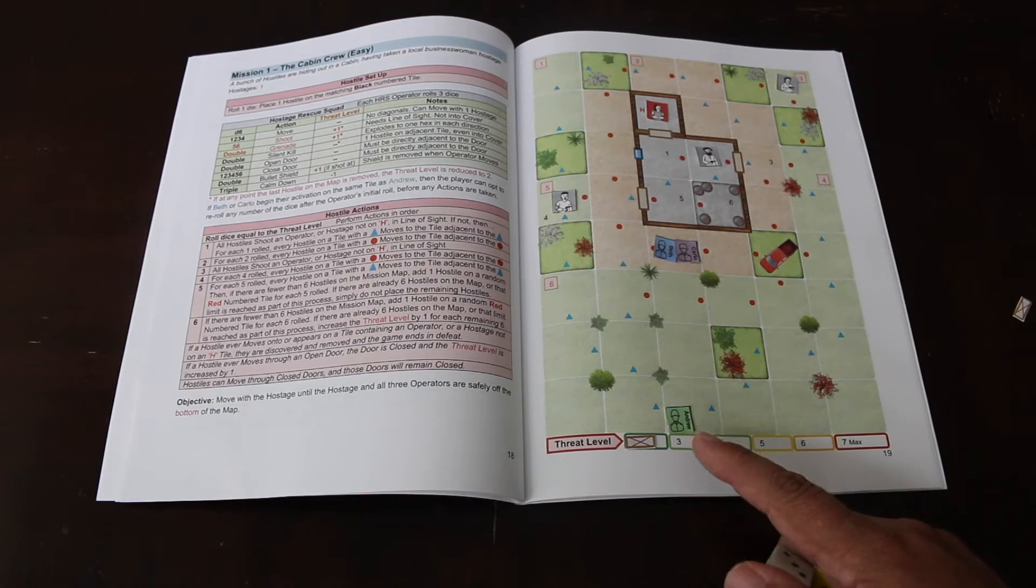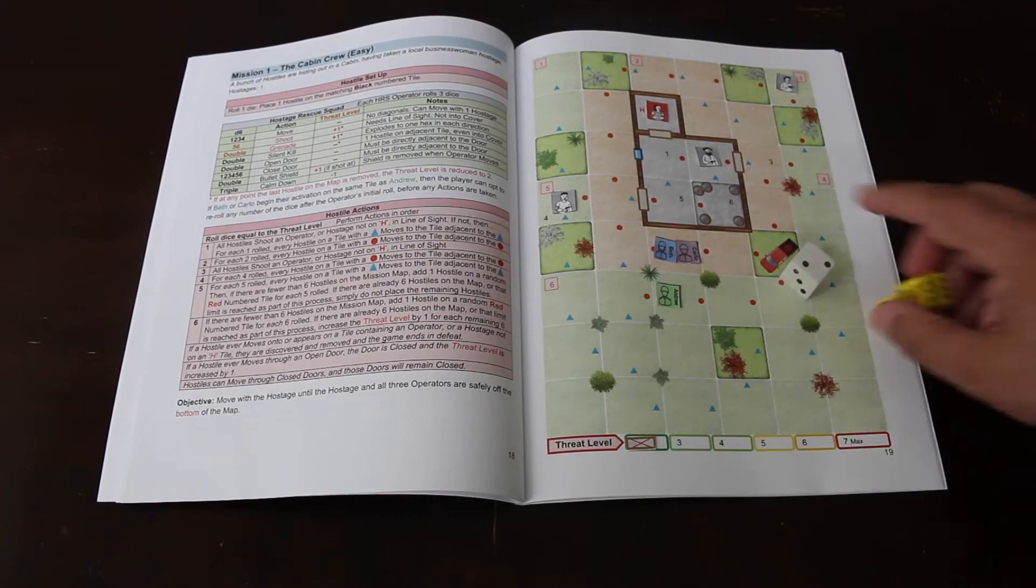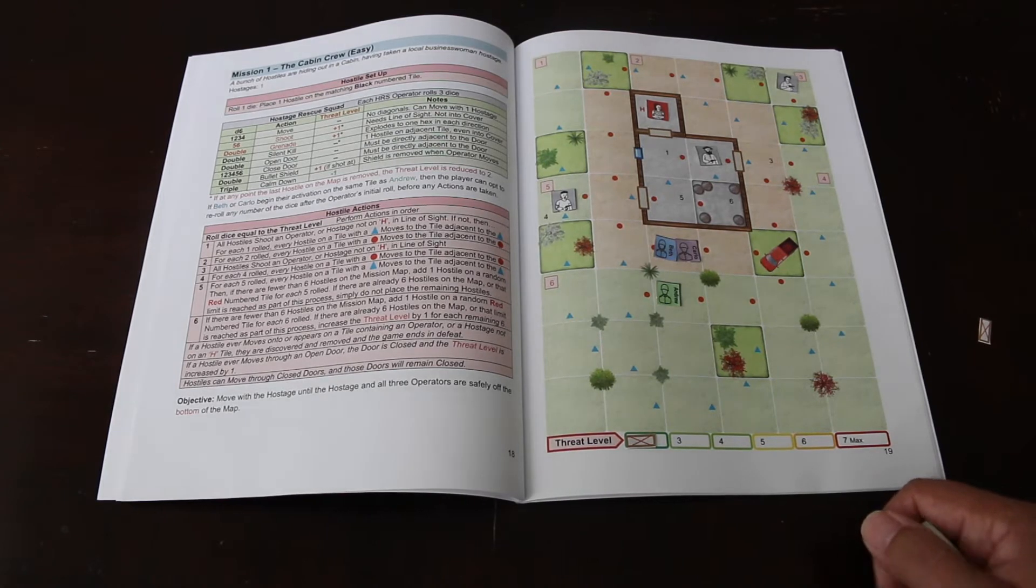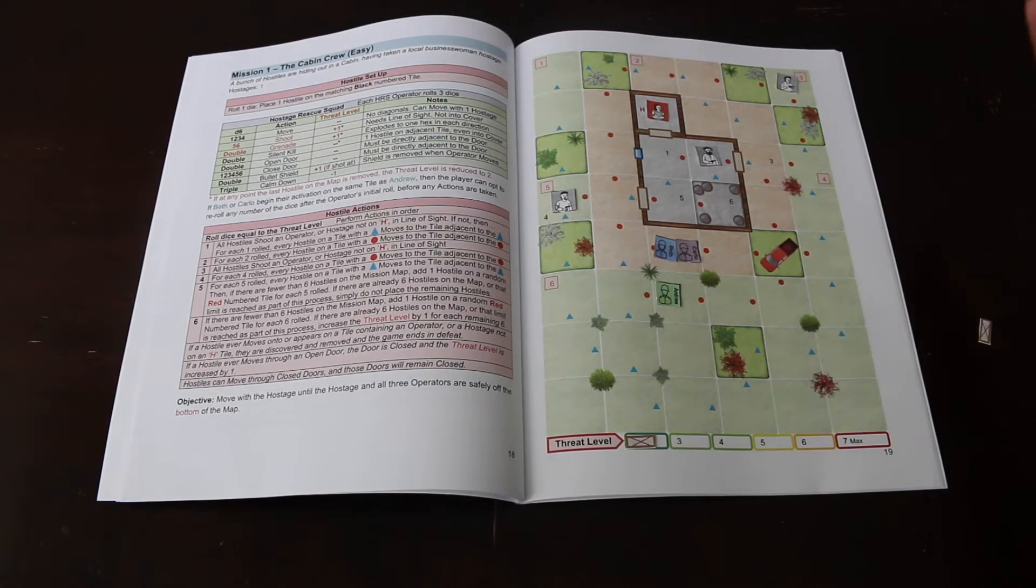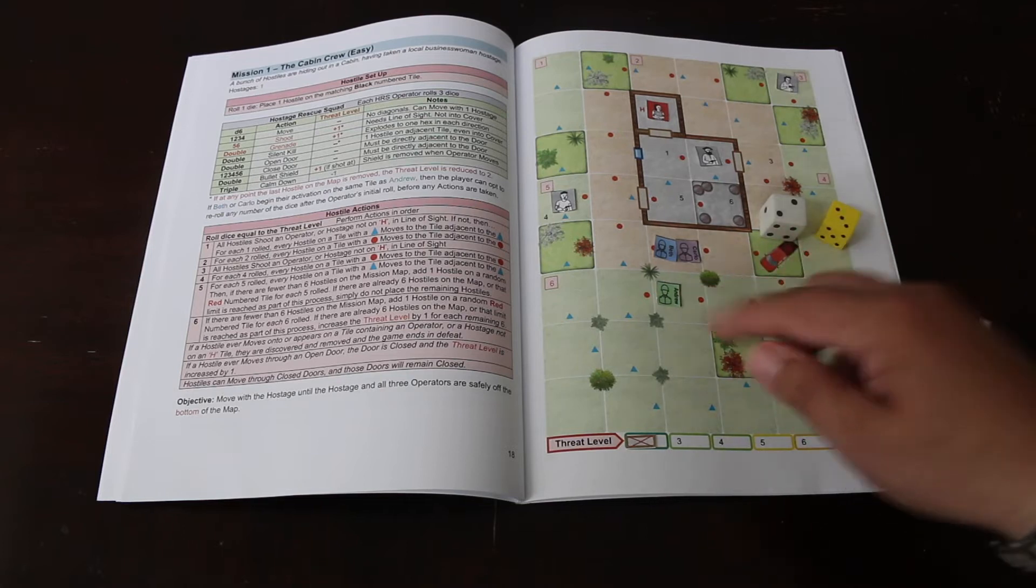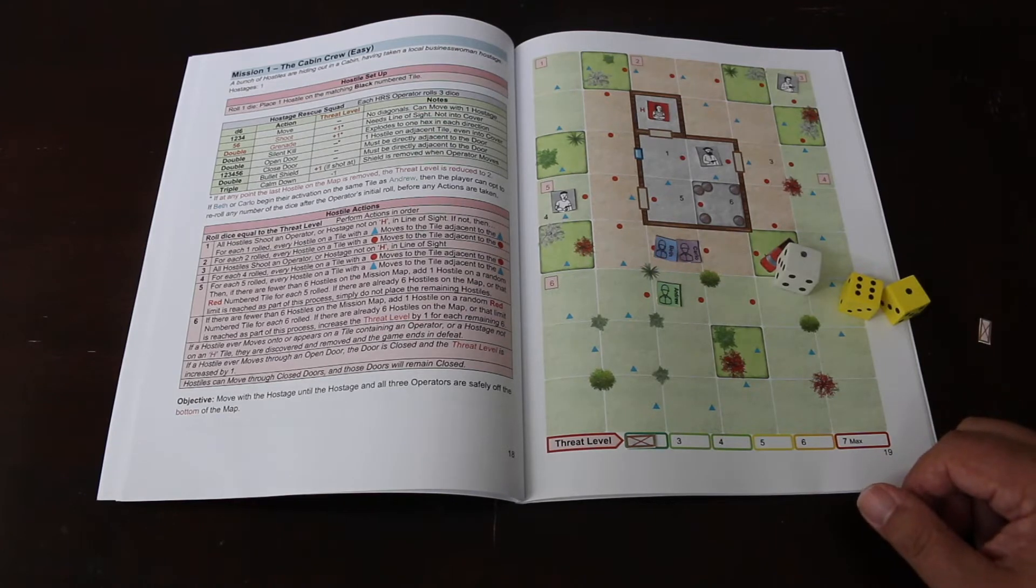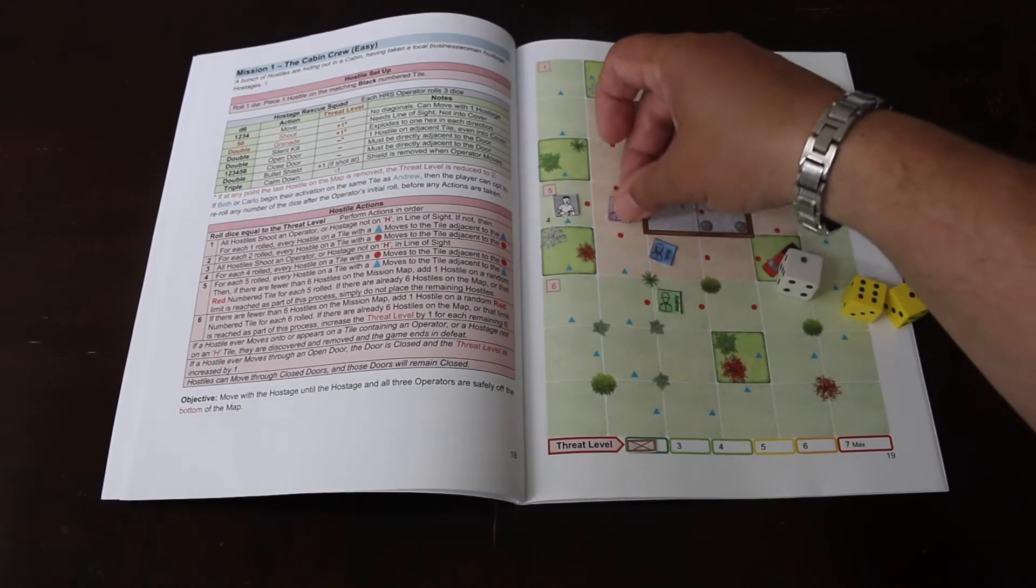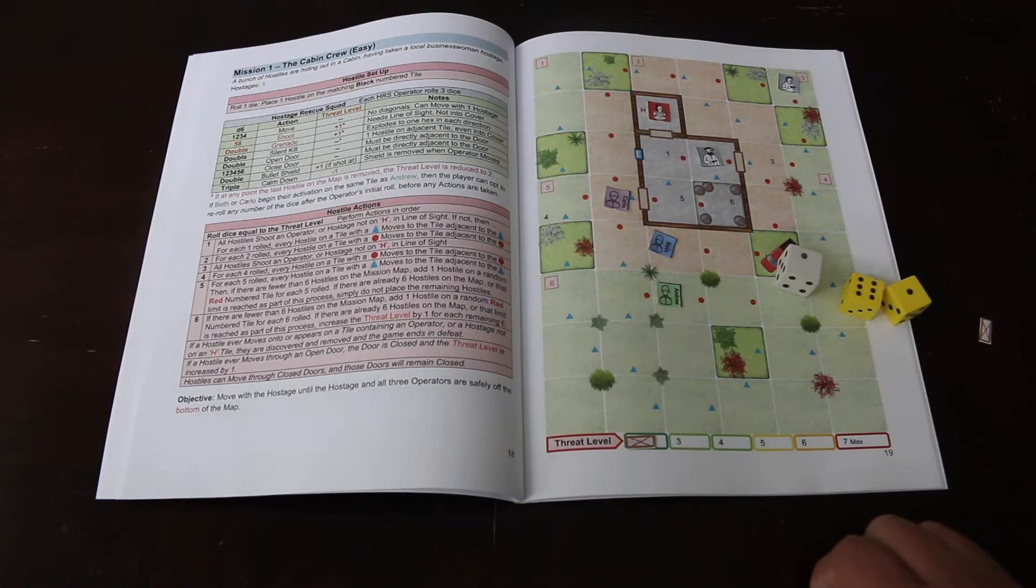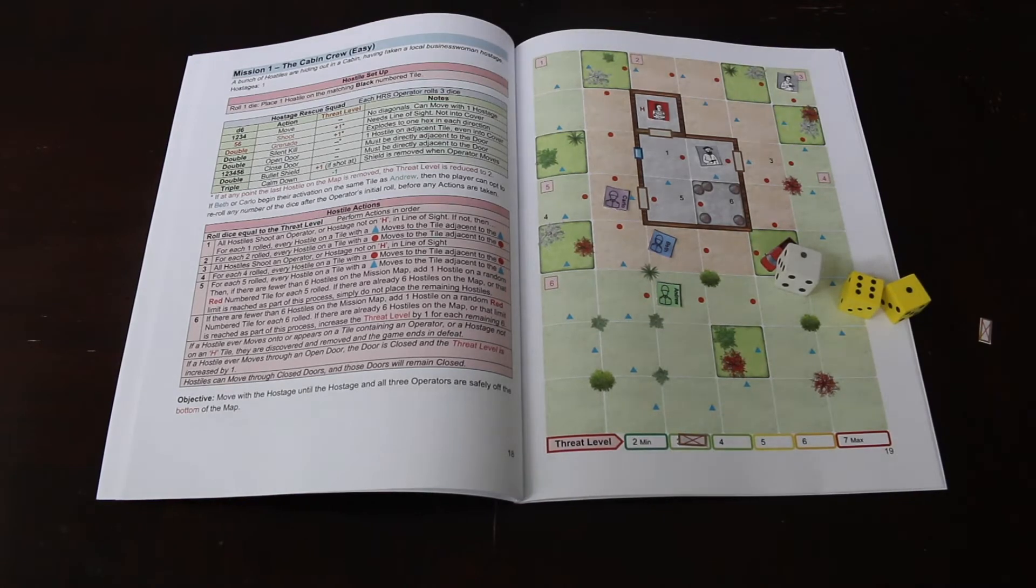We're going to start a new turn. First thing we're going to do is try and get Andrew to move forward. He's able to move two spaces, that's good. Let's roll for Beth and Carlo. Carlo gets two moves and a shoot. He's going to go one, two, and he shoots and automatically kills this guy. But that makes noise. This is kind of like a zombie game in that if you make noise, the threat level goes up one. Now the bad guys will roll three dice.